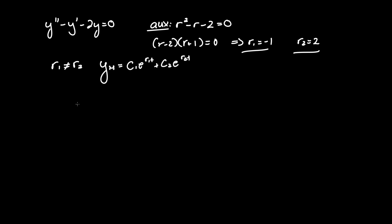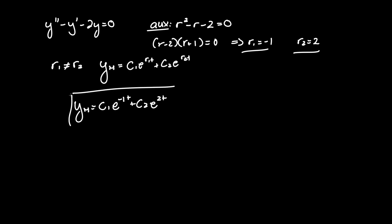Plugging those numbers in, we have yh equal to c1 — constants that include a degree of variation such that we have an infinite number of solutions — times e to the negative t, plus c2 e to the positive 2t. And that's all. If you have any questions, please leave them in the comments below, and good luck.